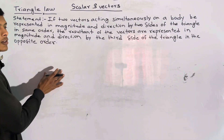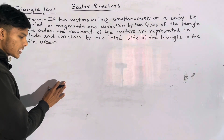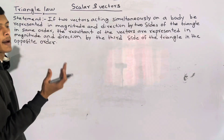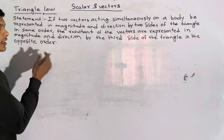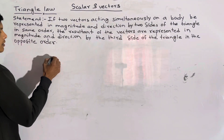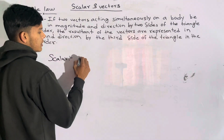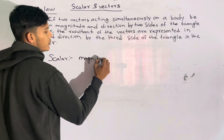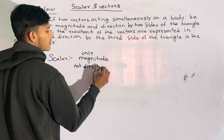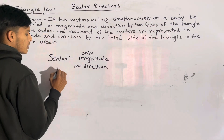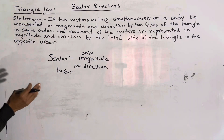First, I want to know what is a vector and what is vector addition. First: scalar — this is the one that has only magnitude, not direction.